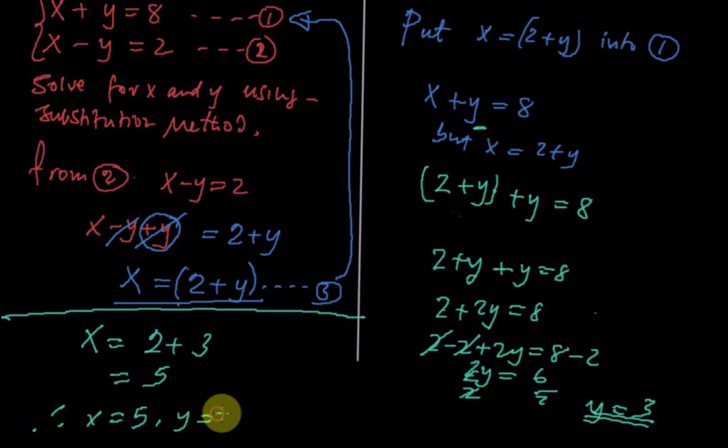So 2 plus 3, and 2 plus 3 we all know is equal to 5. So therefore x equal to 5 and y equals to 3. If you put 5 here, you'll get 8. If this is 5 and this is 3, 5 plus 3 is 8 for sure. And if this is 5 and this is 3, this will equal 2. So you see how substitution works better. So that is substitution. This is a substitution method.